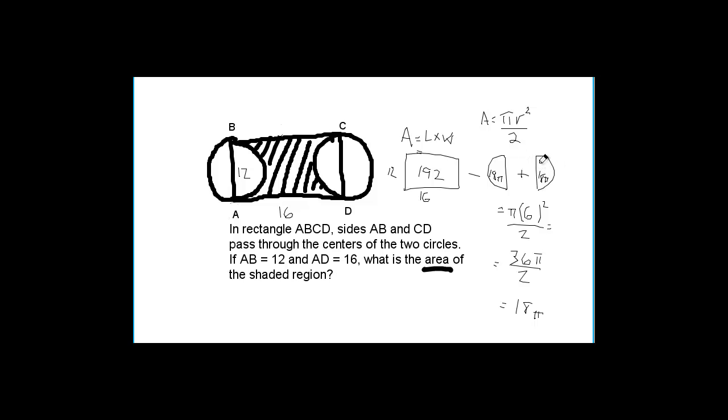Now we're ready to finish the question. The total area of the shaded region is 192, and I'll write it down here, minus 18 pi plus 18 pi, which is 36 pi. And that is the final answer.